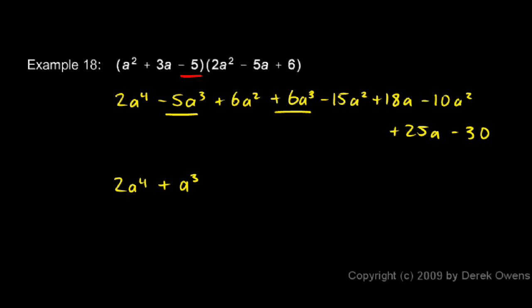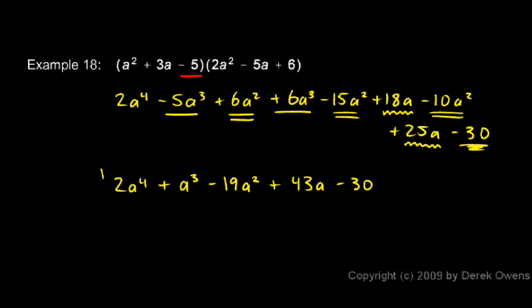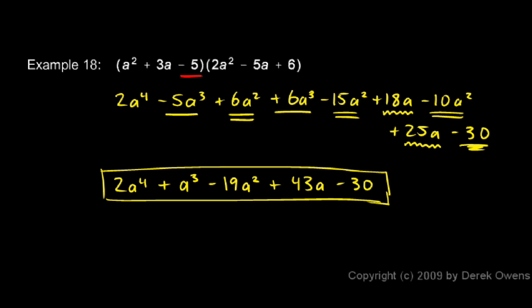Then I find the a squared terms — there are three of them: 6a squared, negative 15a squared, and negative 10a squared. Those add up to negative 19a squared. And then I have some a terms: 18a and 25a — those combine to 43a, which is positive, so I write plus 43a. And then minus 30 on the end. So the final answer is 2a to the fourth plus a cubed minus 19a squared plus 43a minus 30.